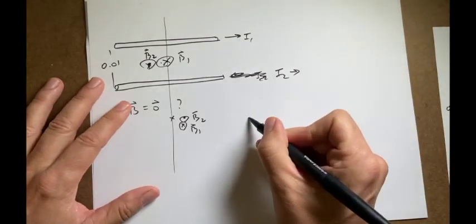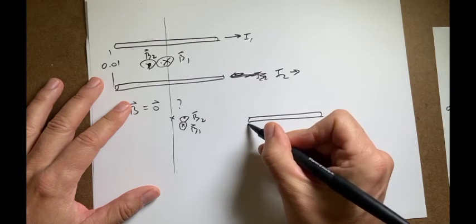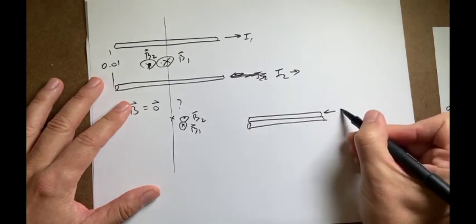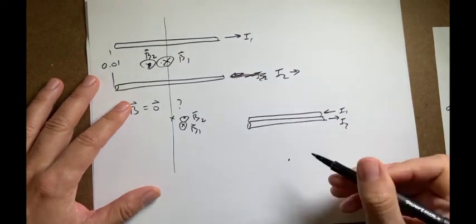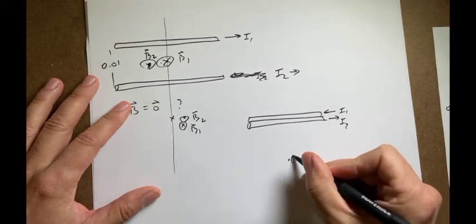Another way to get a zero magnetic field is to do this. Or very close. If these wires are super close to each other, I1, I2, and in opposite directions, and I get over here, then I'm about the same distance from both wires.